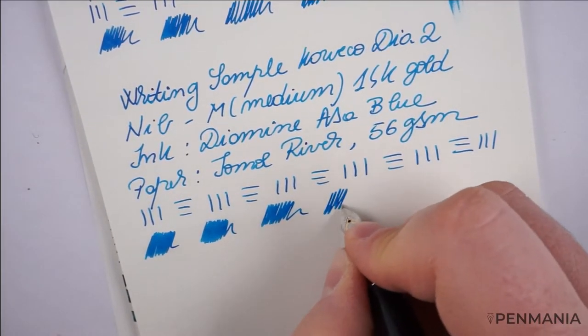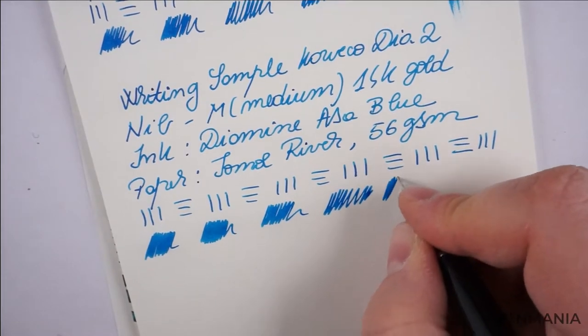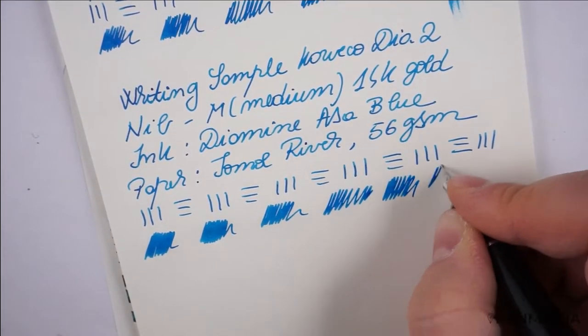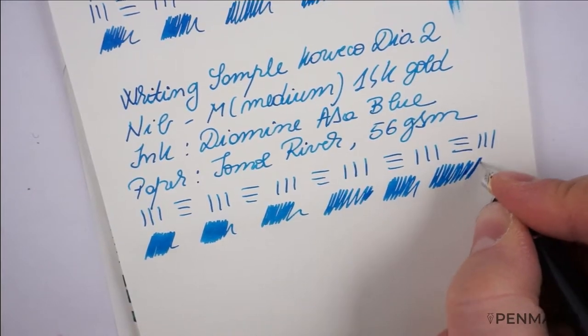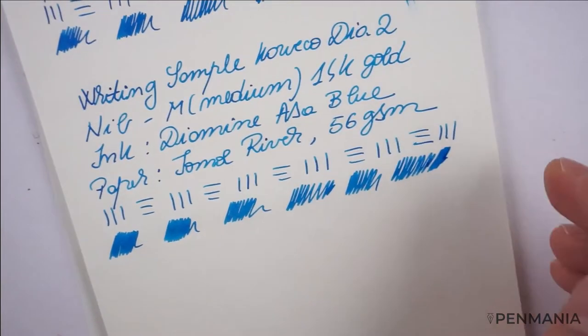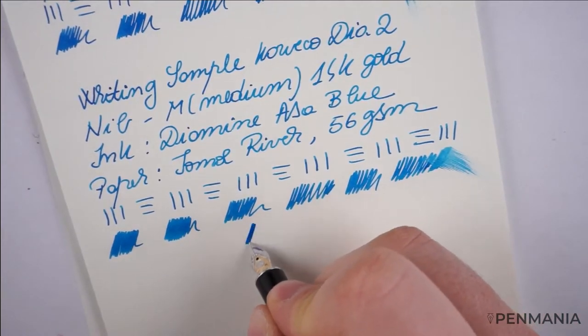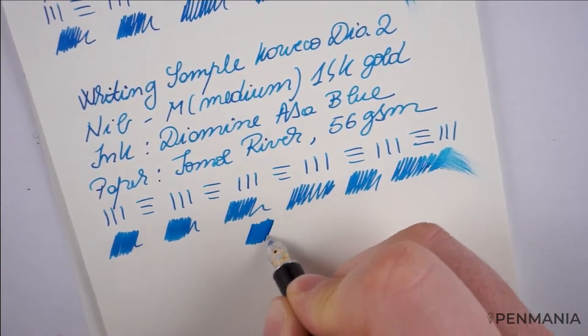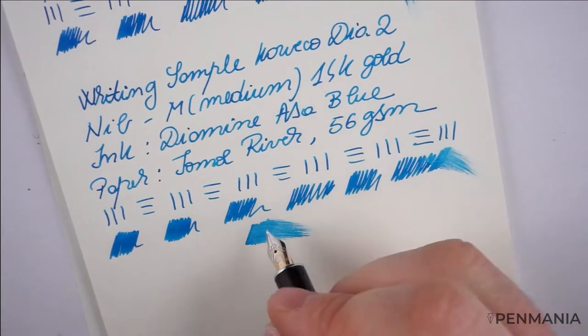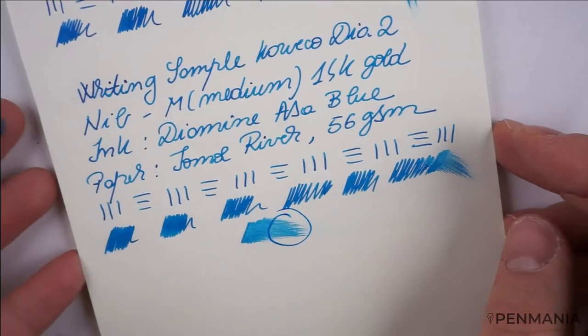Tomoe River paper is my favorite paper to write with a fountain pen, and I think it brings out the color of the inks quite beautifully. The colors of the ink stand out on this paper, from my perspective.